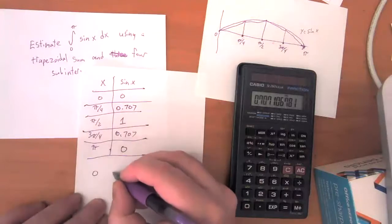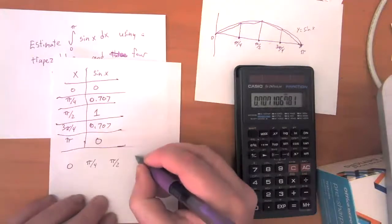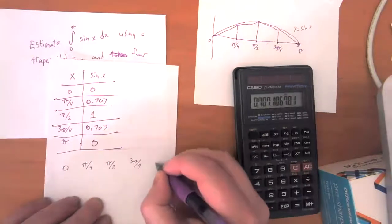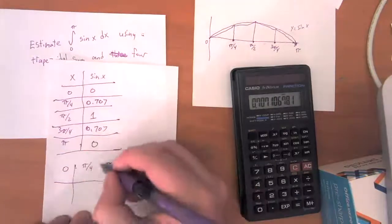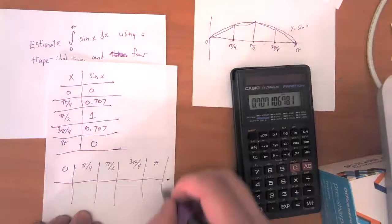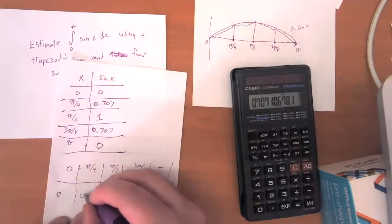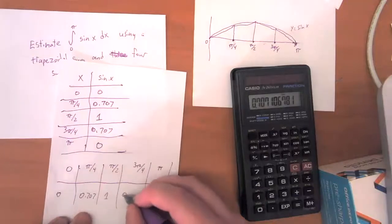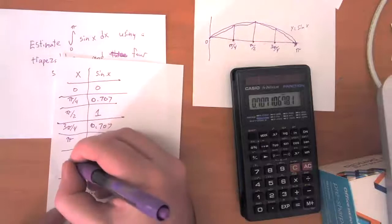So this is going to be the same: pi over four, pi over two, three pi over four and pi. Kind of do the table this way, just so it looks like what we just did in the last problem. Zero, 0.707, one, 0.707, and zero. So I've got four sub intervals.